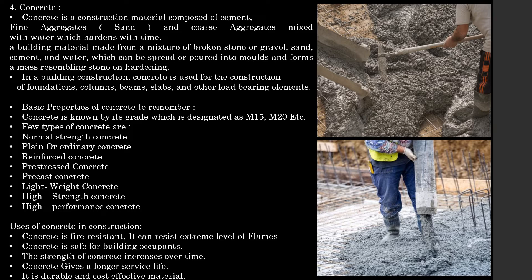Basic properties of concrete: concrete is known by its grade, designated as M15 and M20. Few types of concrete are normal strength concrete, plain or ordinary concrete, reinforced concrete, pre-stressed concrete, precast concrete, lightweight concrete, high strength concrete and high performance concrete. Uses of concrete: concrete is fire resistant and can resist extreme levels of flame. Concrete is safe for building occupants, and the strength of concrete increases over time.